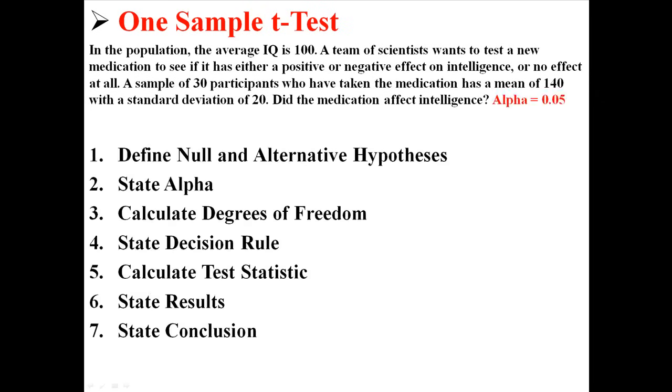So we're going to answer this question using these seven steps with an alpha level of 0.05. Notice that we don't know the population standard deviation. We only know that the population mean is 100. We do however know the sample standard deviation, which in this case is 20. That's why we're doing a t-test instead of a z-test.